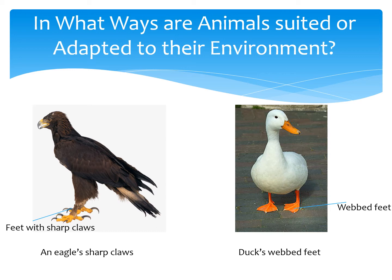Different habitats have different environments. The environment of a habitat is made up of living things in the habitat as well as physical conditions. These include air, water, temperature, light, and soil. Animals have characteristics that help them survive in their habitats.